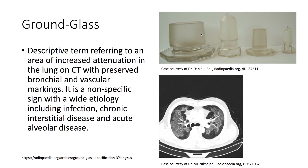Ground glass, as shown here, is a descriptive term referring to an area of increased attenuation in the lung on CT, with preserved bronchial and vascular markings. It's a nonspecific sign with a wide etiology, including infection, chronic interstitial disease, and acute alveolar disease.